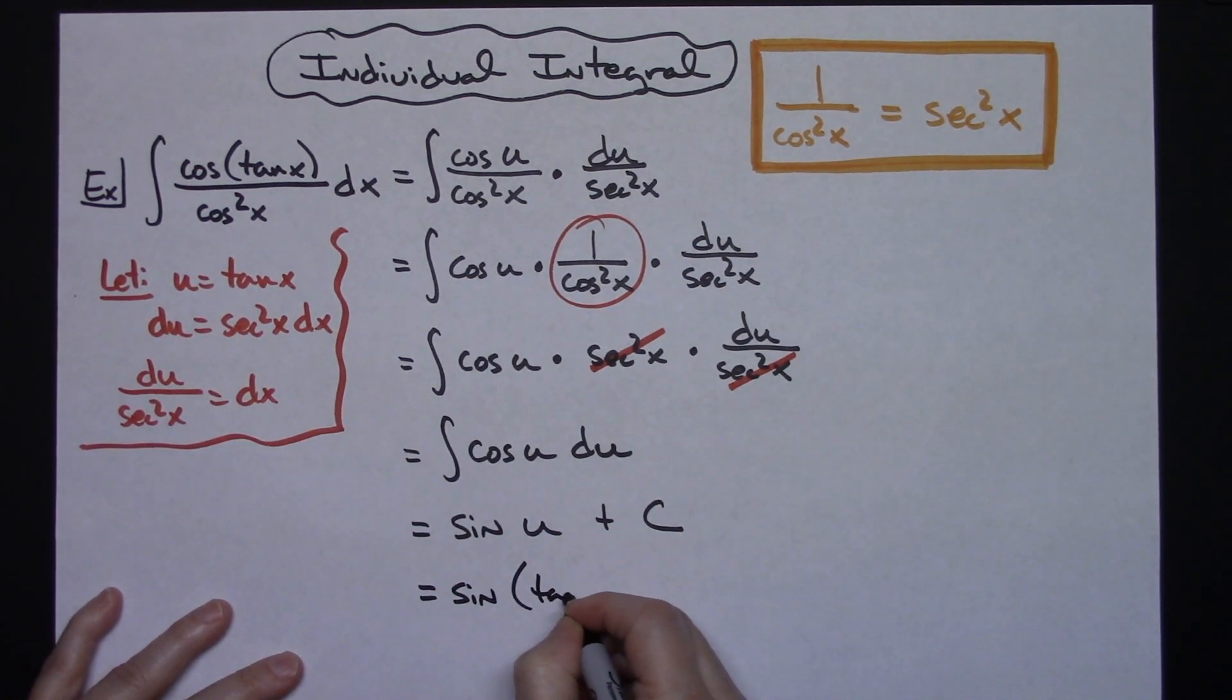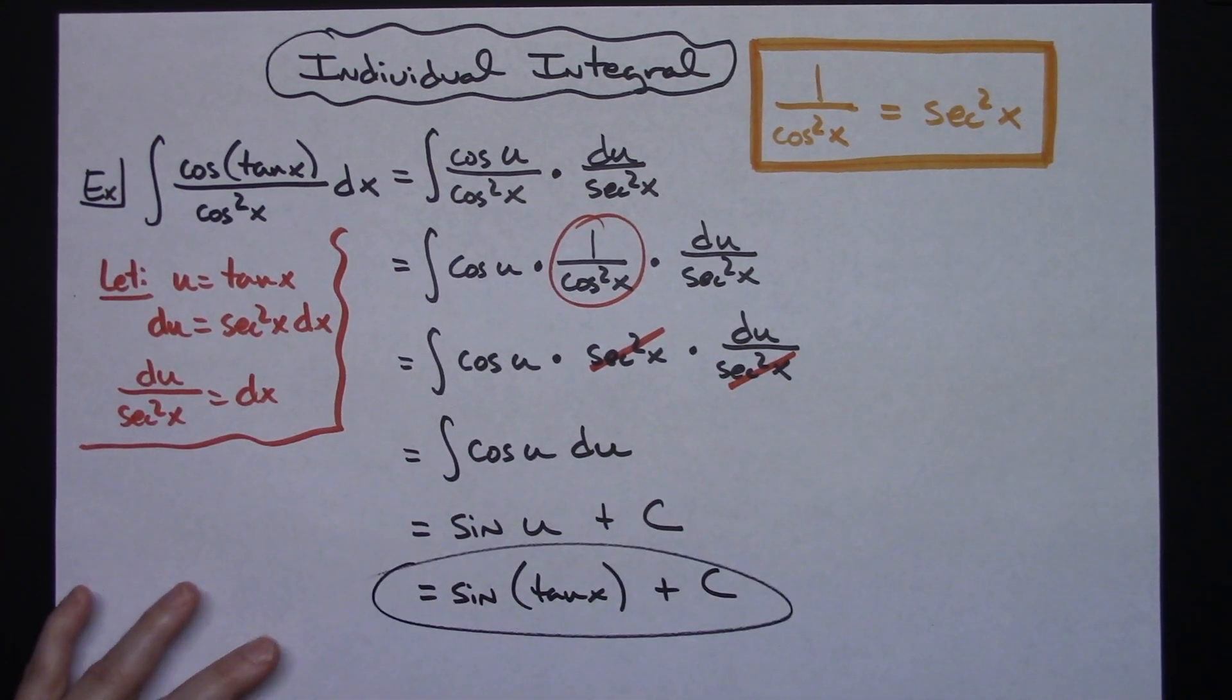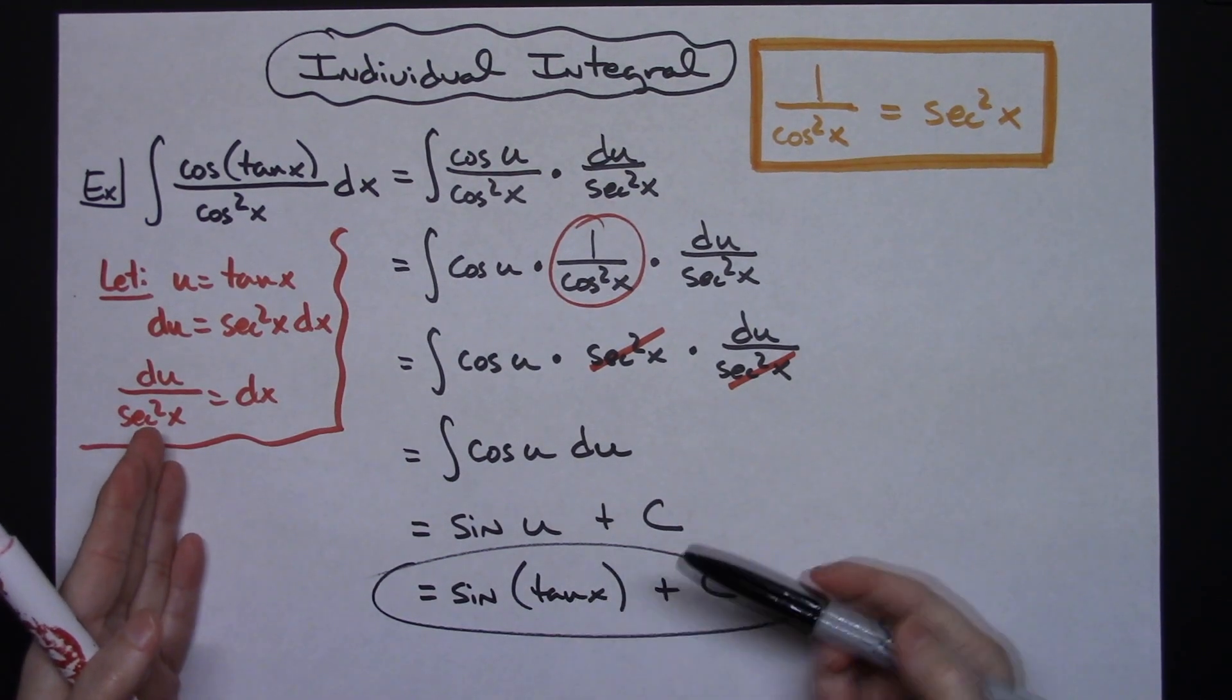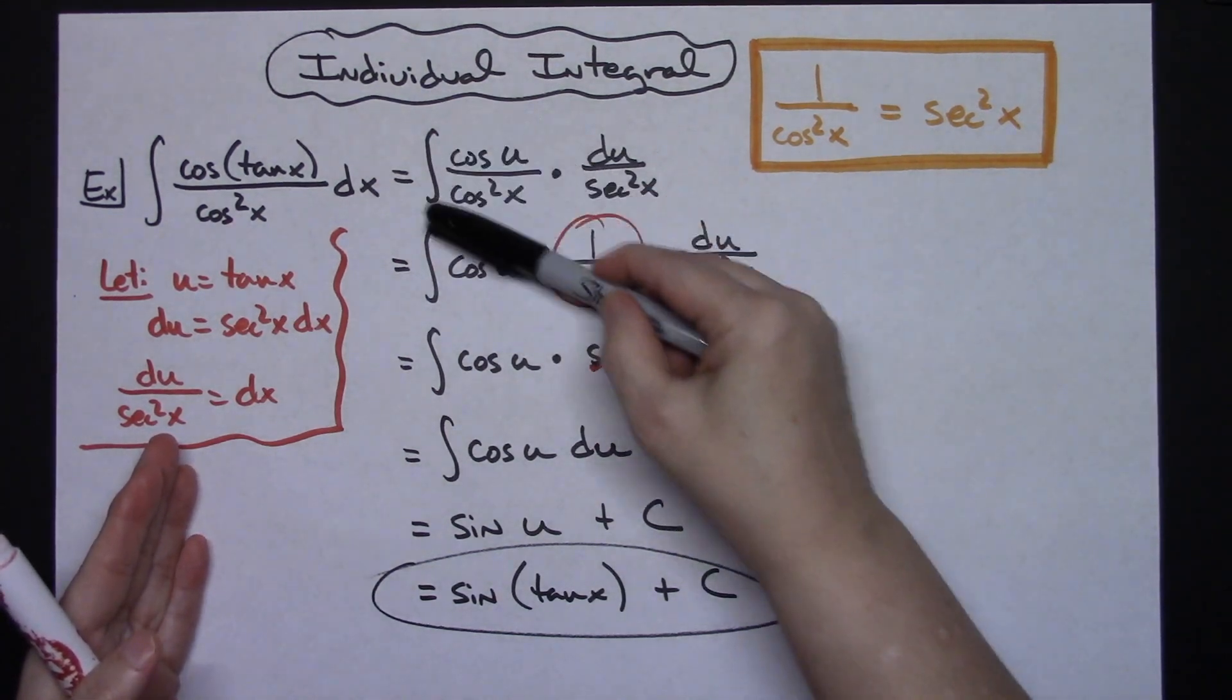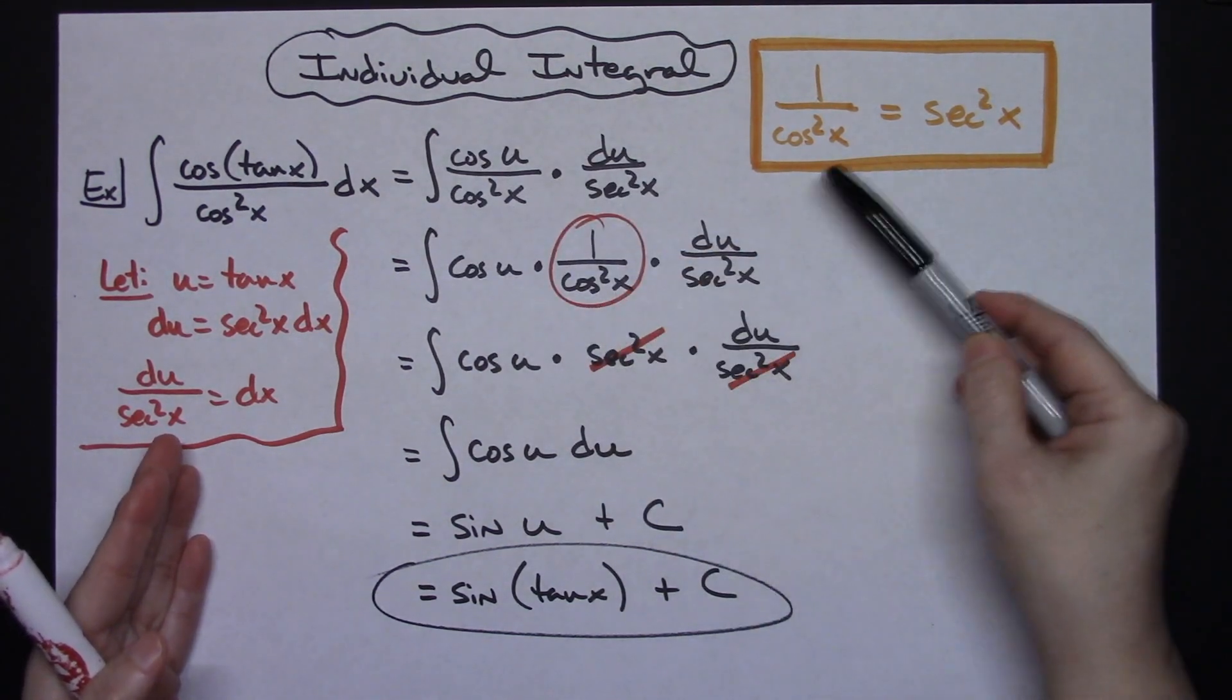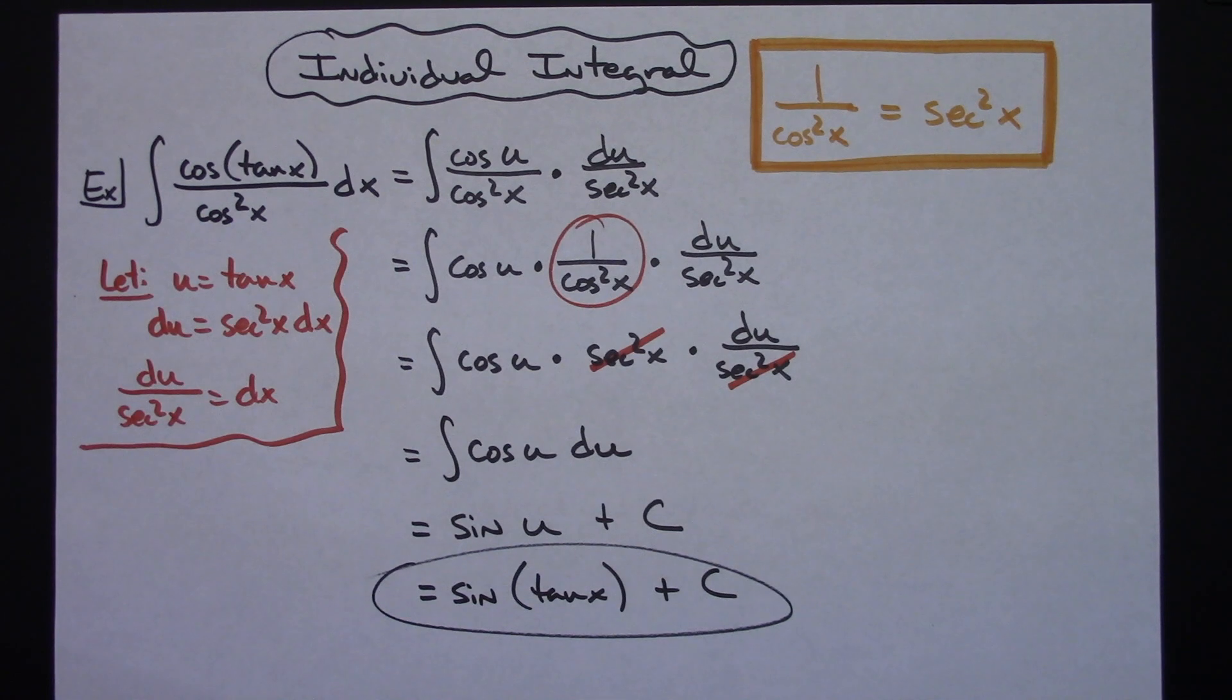It's definitely straightforward as far as u-substitution goes, but because of the trig functions, you're going to have to manipulate this so you can see it well enough to make whatever trig substitutions you need to get to an integral that you can actually work out.